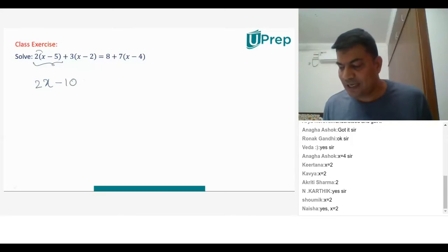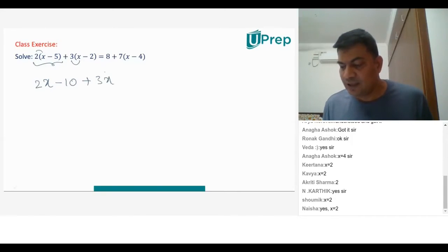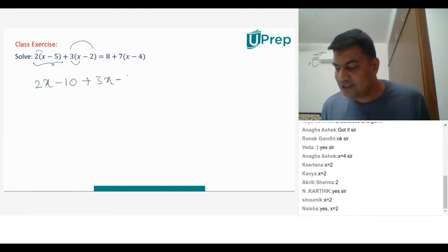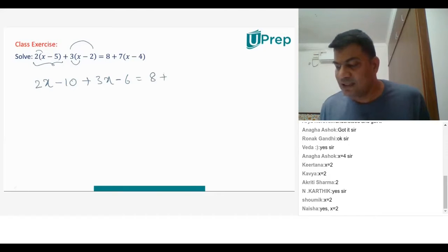2x minus 10, plus you have 3 into x. This is 3 into x is 3x. 3 into minus 2 — plus into minus will be minus. 3 into 2 will be 6, is equal to 8 plus 7 into x, which will be 7x.